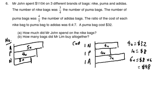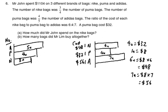So $48 is the cost of one Nike bag. Puma bag we know is $32 as given in the question, and Adidas bag is seven units: $8 multiplied by seven, which is $56. So all this is the cost of one bag.